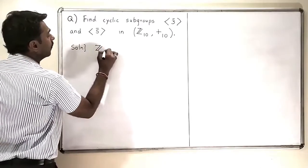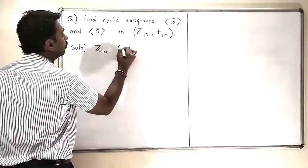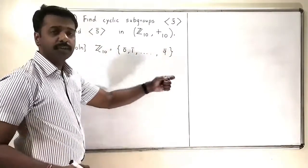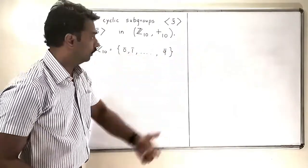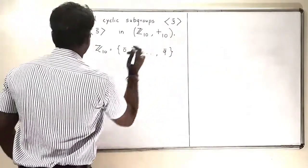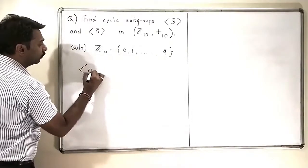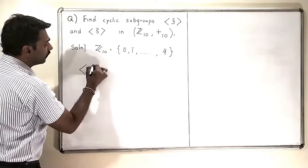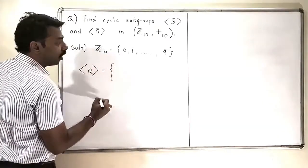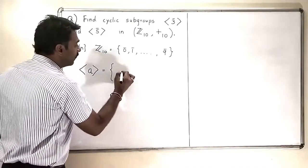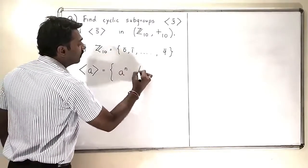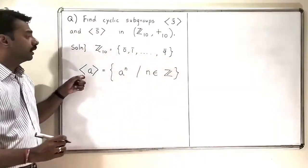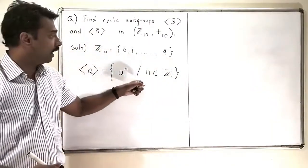The elements of Z10 are from 0̄ to 9̄, and 10̄ will be treated as 0̄ and so on. Now let us recall the definition of cyclic subgroup generated by A: it is the set of all elements of the form A raised to N, where N is an integer.